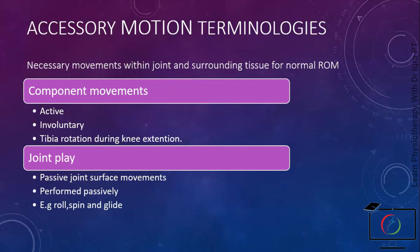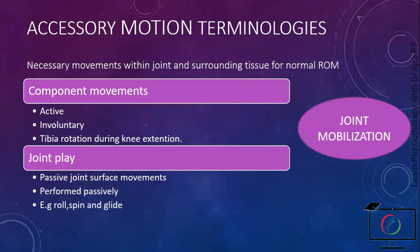Examples of joint play movements are roll, spin, and glide, which we will study in orthokinematics in detail. Both component movements and joint play movements are very important for joint mobilization, which is a physical therapy technique used to improve joint mobility or decrease pain.